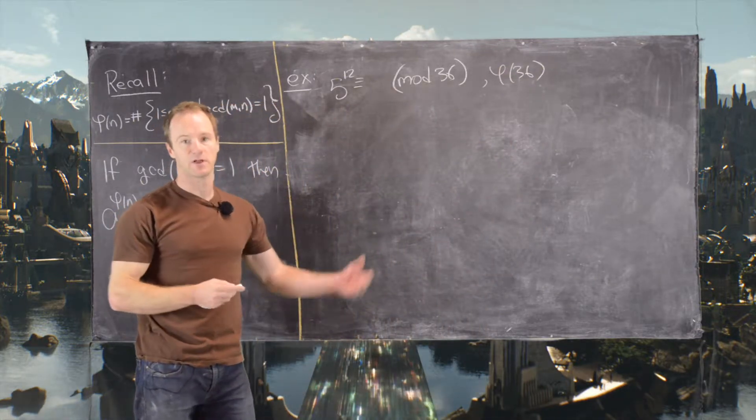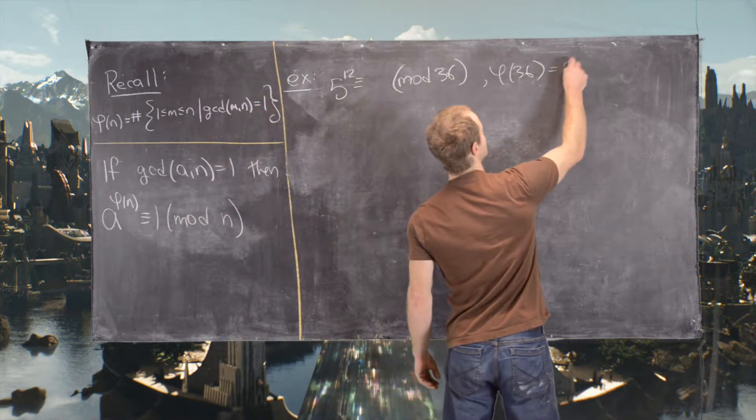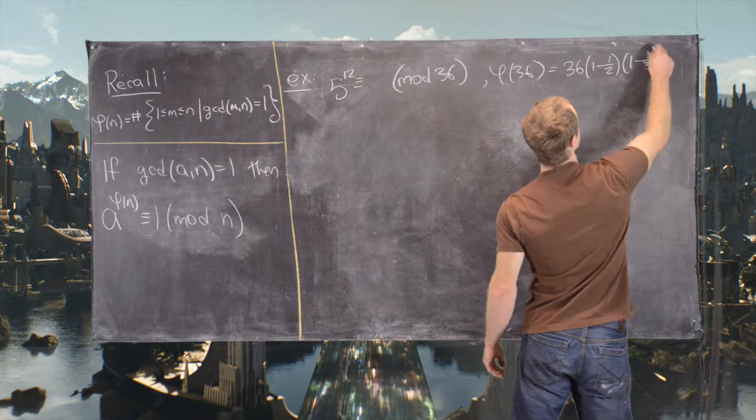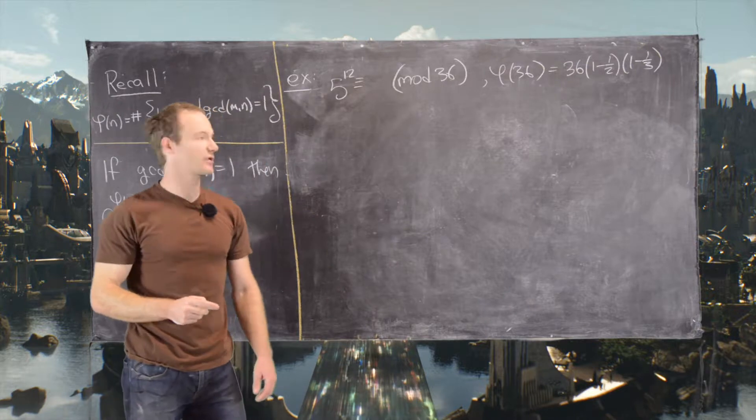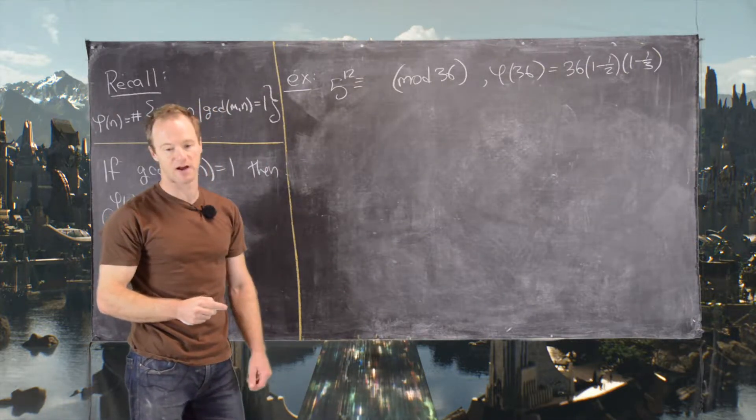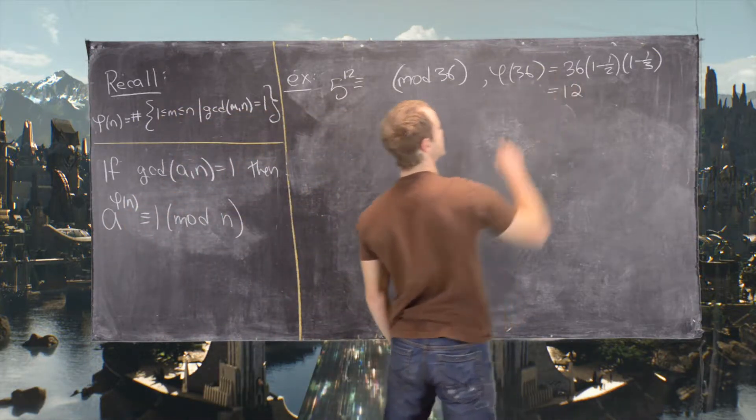I'll use a formula which we derived in a previous video. So this is equal to 36 times 1 minus half times 1 minus third. It's equal to the original number and then 1 minus the reciprocal of all of the prime factors. So 2 and 3 are the only prime factors in this case. You can check that this is indeed 12.